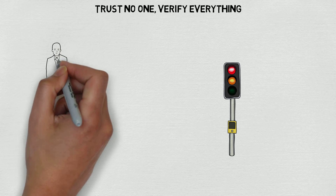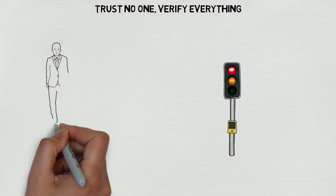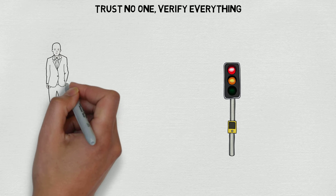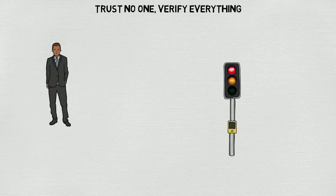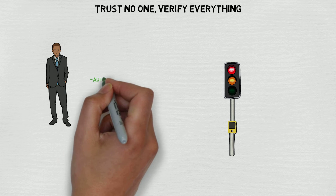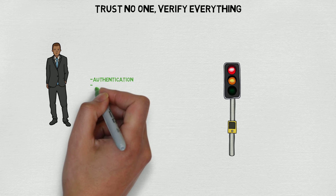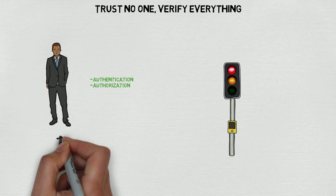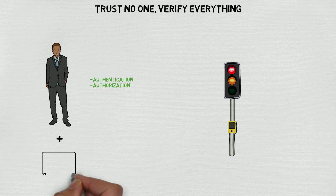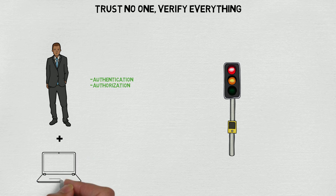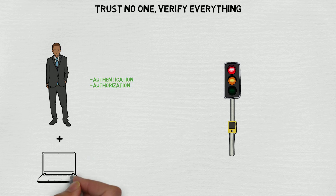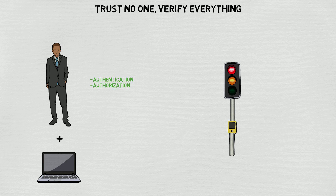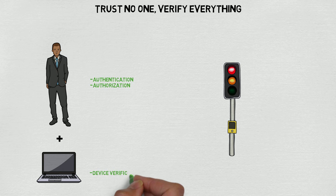Verification involves a human and machine element before trust can be established. The human element involves verifying the user is who they say they are through authentication, and that they have the permission to the resource they are requesting through authorization. While this verifies the person, we also need to know that they're coming from a trusted device that has not been compromised, and that's where machine verification comes in. By verifying the machine or device a user is connecting on, we limit the exposure a compromised machine could have to sensitive data and prevent lateral movement across the network.